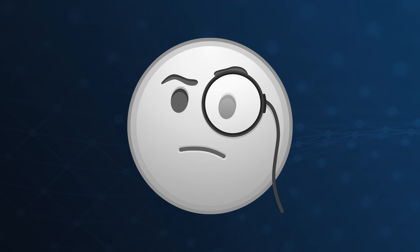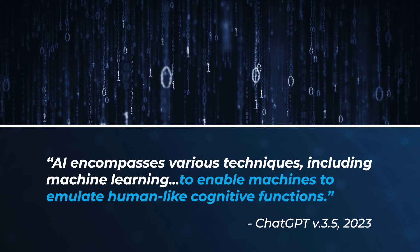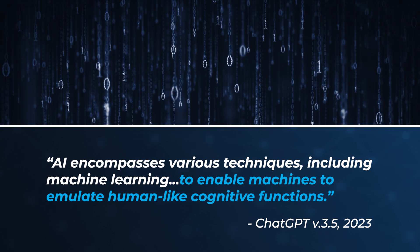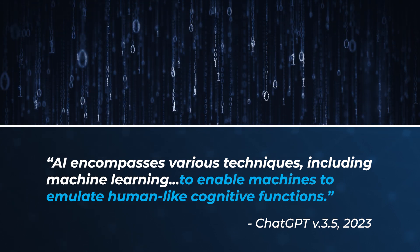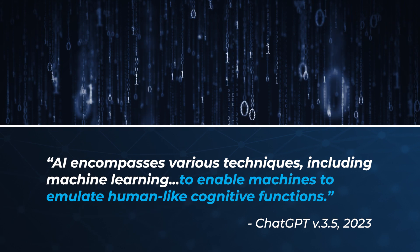AI really has the potential to have significant impacts and overall benefit us in efficiency and effectiveness. How does AI learn? That's where ML comes in. AI encompasses various techniques, including machine learning, to enable machines to emulate human-like cognitive functions.